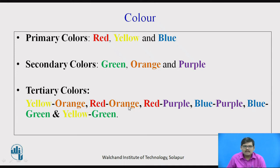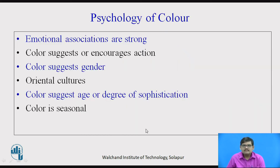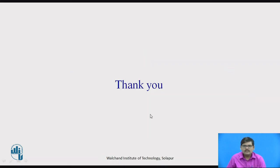Primary colors are red, yellow and blue. Secondary colors are green, orange and purple. By mixing primary and secondary colors, tertiary colors are formed: yellow-orange, red-orange, red-purple, blue-purple, blue-green and yellow-green. Then, psychology of color — there is an emotional association between color and the person. Color suggests or encourages actions. Red suggests danger; blue suggests calmness. Color also suggests genders, like blue for boys.